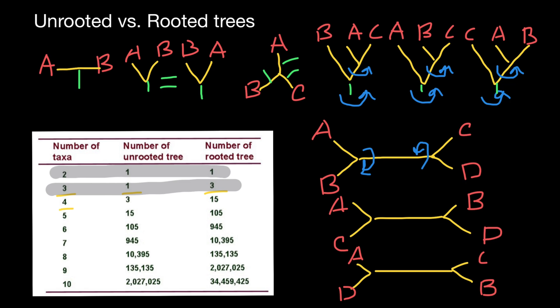Now let's find how many rooted combinations we may have. We can put the first root here, second here, third here, fourth here, fifth here — and continuing to count all possible positions across the three unrooted trees gives us a total of 15 different rooted combinations.